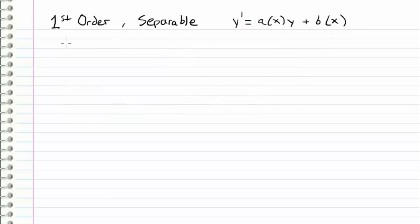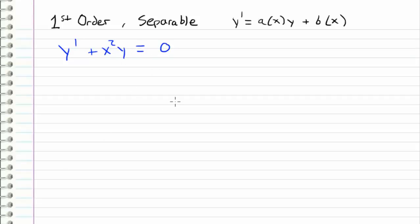So we're going to go ahead and work through a couple of examples. Let's start off with an easy one: y prime plus x squared y is equal to 0. And right away, we can see that this does in fact fit this form.